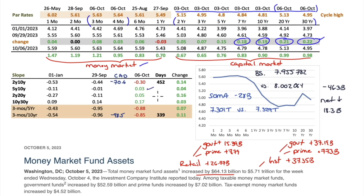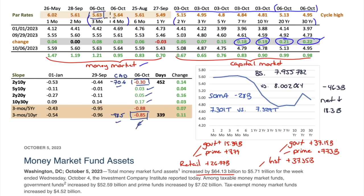Inversion is reducing further. The 5-to-10 is now positive, the 2-to-20 and 10-to-30 are positive. The 2-to-10 is still inverted at negative 30 basis points; in Canada it's negative 70. The more damaging inversion is the 3-month to the 10-year at negative 85 basis points — in Canada it's almost 100. For the curve to go flat, the 10-year will have to do all the heavy lifting since the 3-month will hold tight to where monetary policy is.